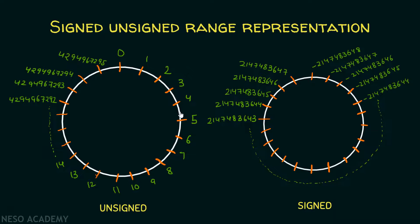Let's visualize this. As we know, for a 32-bit unsigned integer, the range would be from 0 to 4294967295. And if we try to exceed this maximum value — that is, going from 4294967295 to 4294967296 — we come back again to 0.